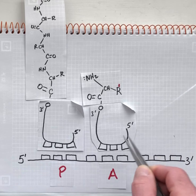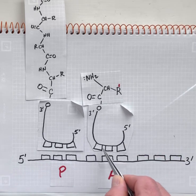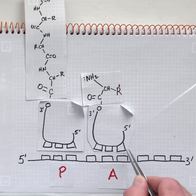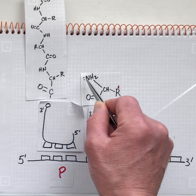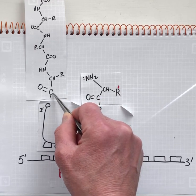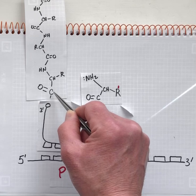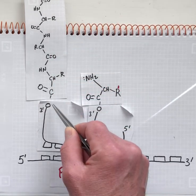The tRNA is making base pairs with its anticodon and the codon on the A-site. These three nucleotides are the A-site codon, and it's poised to undergo nucleophilic attack at this carbonyl center, at the ester linkage connecting the polypeptide to the P-site's tRNA.